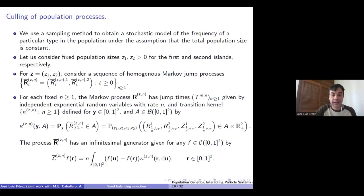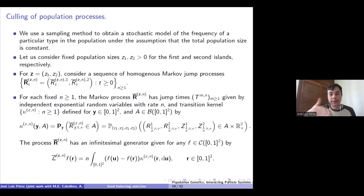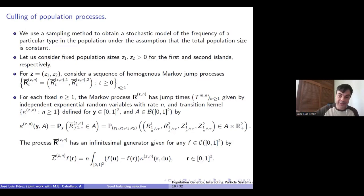In order to construct the frequency process, we use the cooling technique. The cooling technique is a sampling technique with discrete times. We let the original process given by the frequency and the total size of the population evolve in time, and then at each of these discrete sampling times we take the information of the frequency process but push the total size of the population back to a constant level. By iterating this at each sampling time and making the sampling times go to zero, we obtain the frequency process under the assumption that the total size of the population is constant.